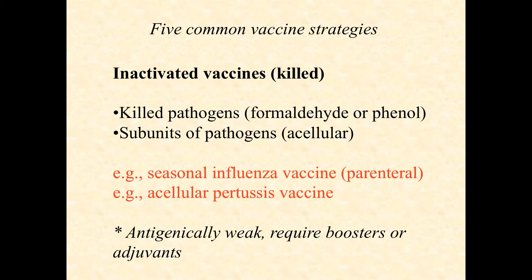Inactivated or killed vaccines are pathogens that have been killed, typically by chemicals like formaldehyde or phenol. In some cases it's just a subunit of the pathogen — these are called acellular vaccines — where only a portion of the pathogen has been used to create the vaccine.